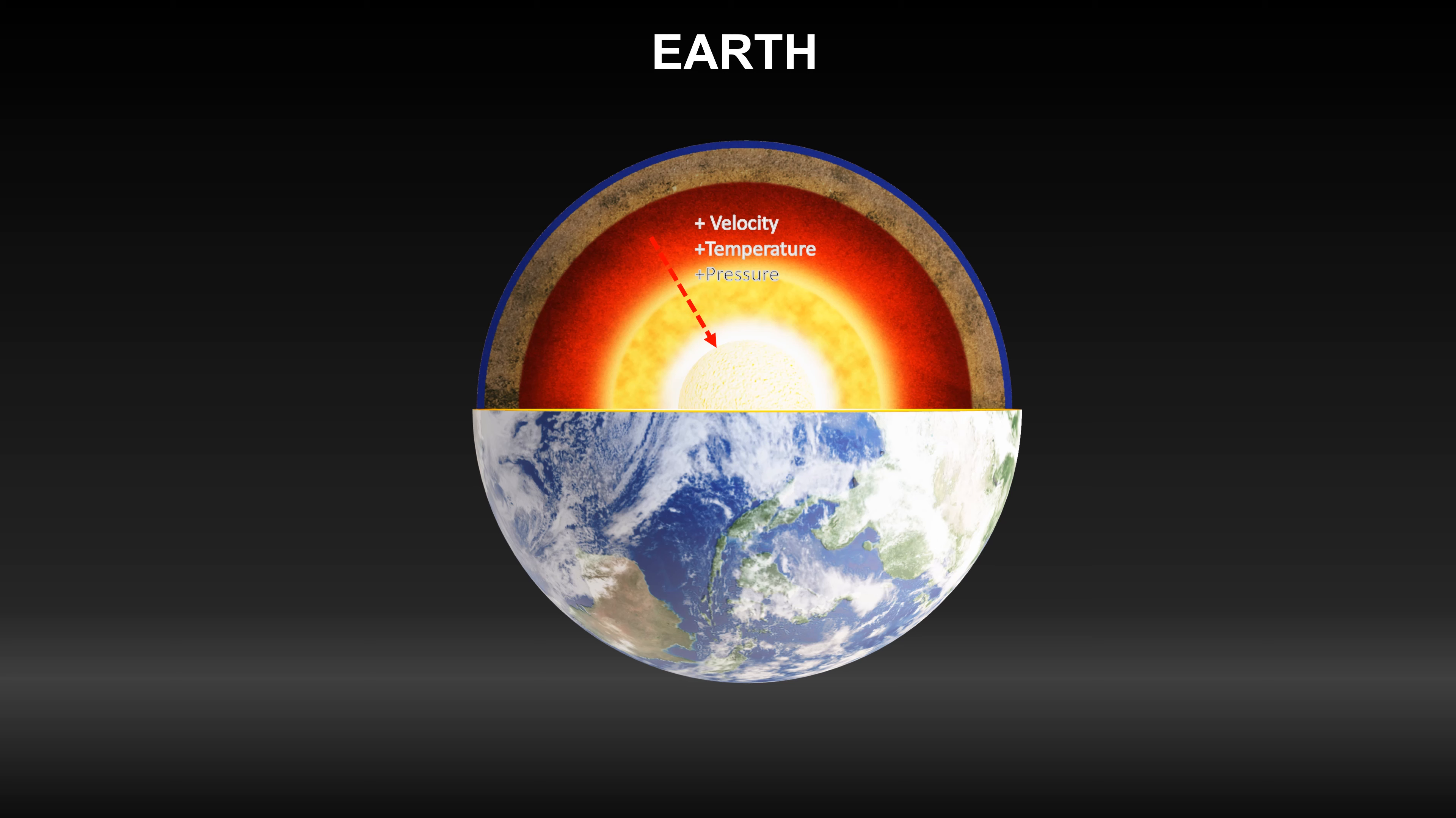The interior of the Earth is characterized by gradual increase of wave speeds, but abrupt changes occur at around 410 and 660 kilometer depth. These are defined as global discontinuities.